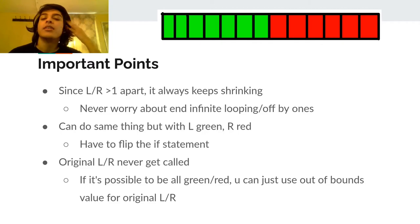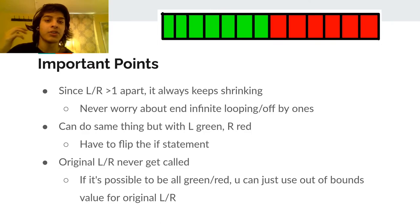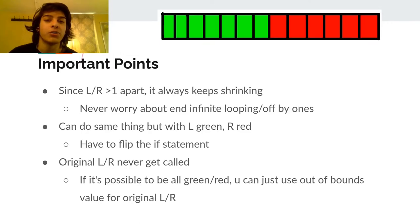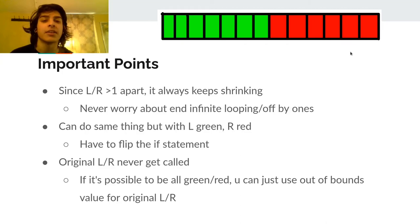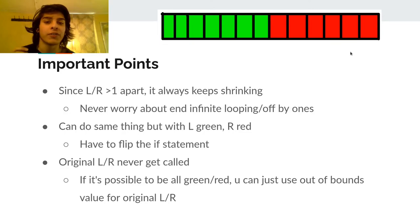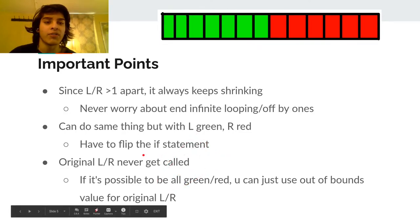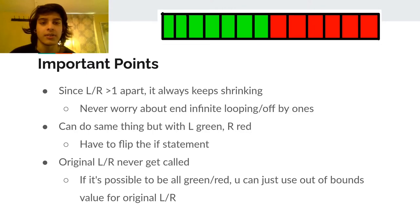You can also do the same thing with the regions flipped, where L starts green and R starts red. It's not anything different — you just initialize L and R in the opposite way, and then flip the if statement so that if M passes the predicate you set L to it, otherwise you set R to it.